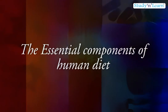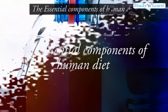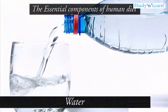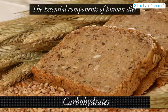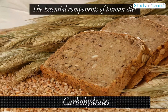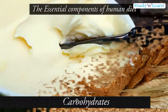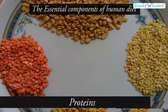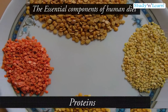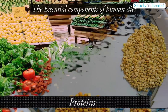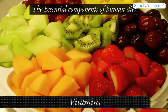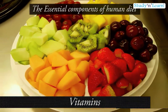The essential components of human diet are: 1. Water, 2. Carbohydrates, 3. Fats, 4. Proteins, 5. Minerals, and 6. Vitamins.